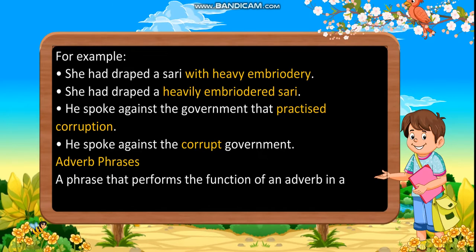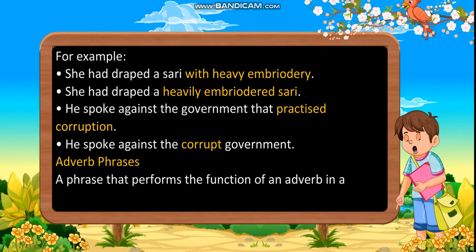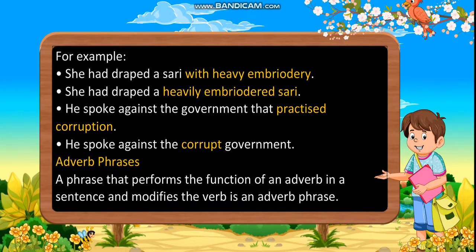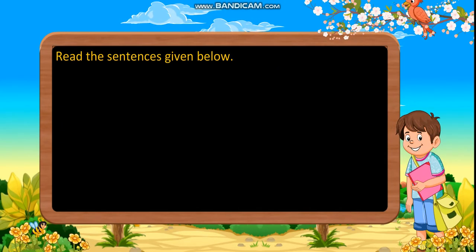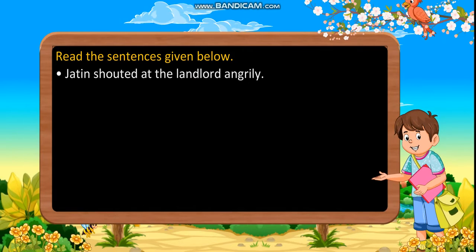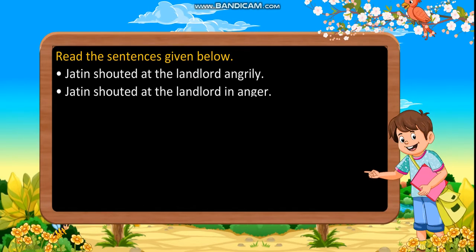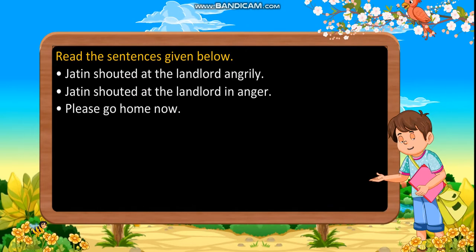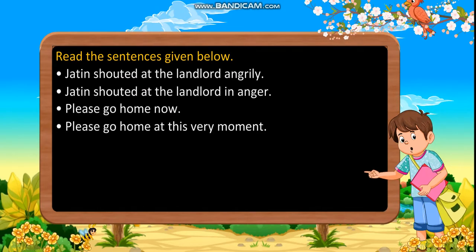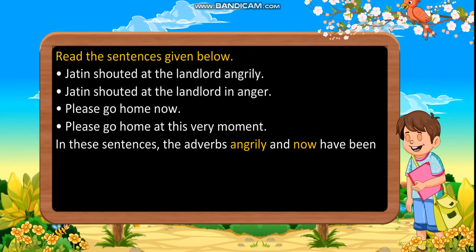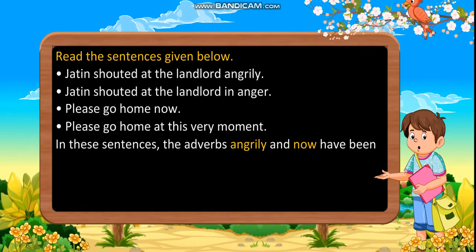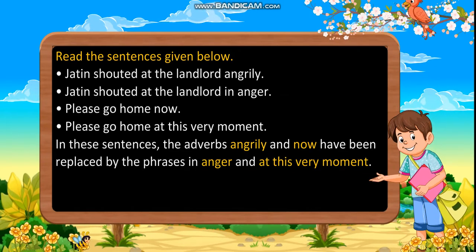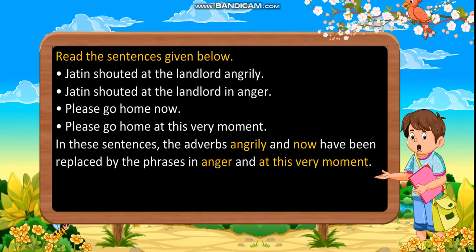Adverb Phrases. A phrase that performs the function of an adverb in a sentence and modifies the verb is an adverb phrase. For example: 'Jatin shouted at the landlord angrily' versus 'Jatin shouted at the landlord in anger.' 'Please go home now' versus 'Please go home at this very moment.' In these sentences, the adverbs 'angrily' and 'now' have been replaced by the phrases 'in anger' and 'at this very moment.'